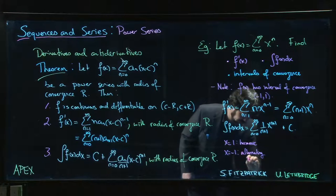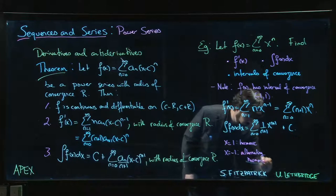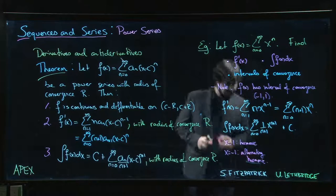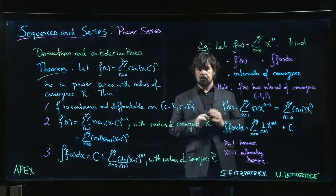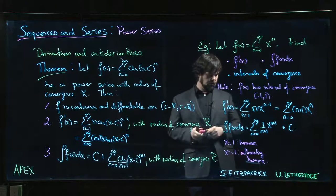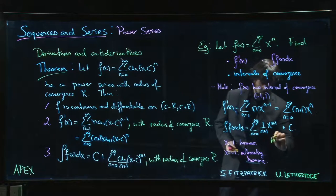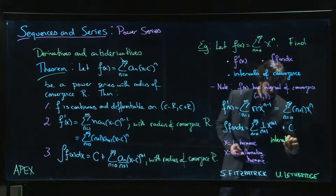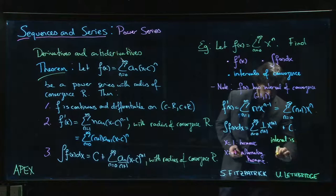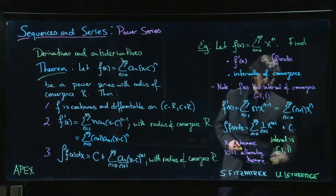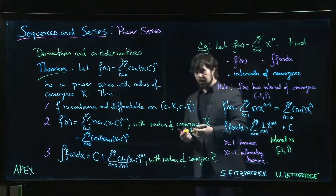And we've seen a number of times that the alternating harmonic series does converge thanks to the alternating series test. So that means the interval here is going to be -1 to 1, including -1 but still not including 1. So we gain an endpoint.